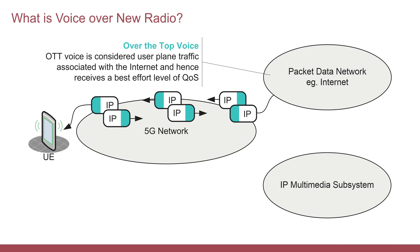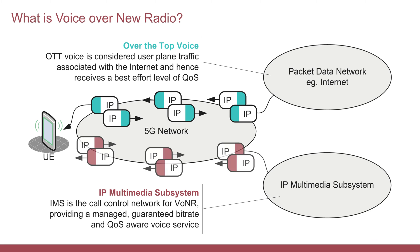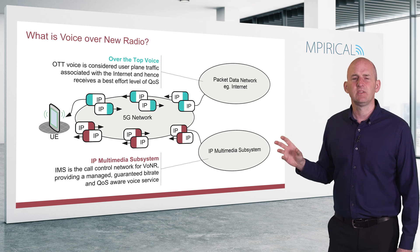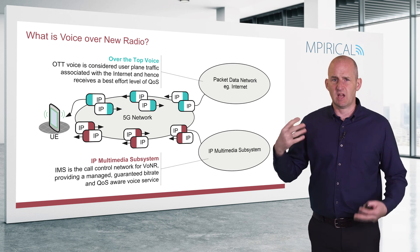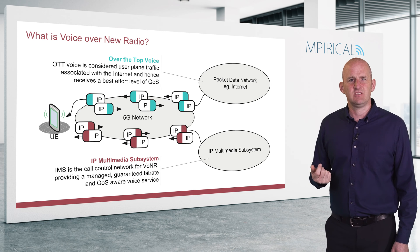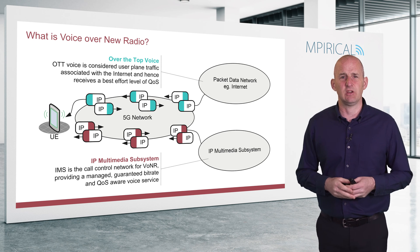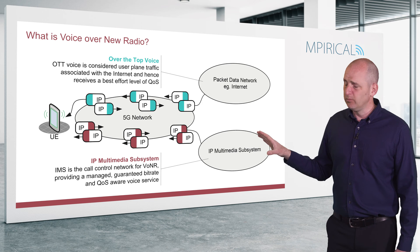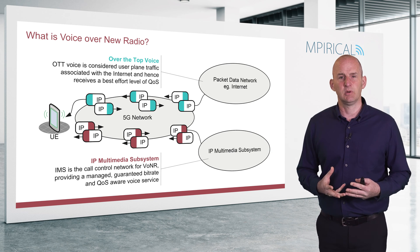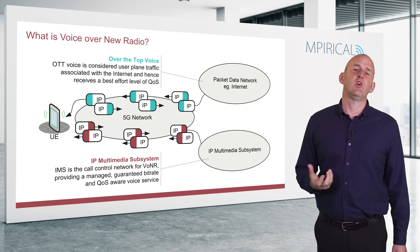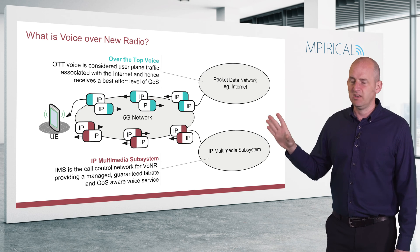There's really nothing to do with the 5G mobile service provider when delivering over-the-top services. VoNR, by contrast, is a voice service entirely managed by the mobile service provider — the big difference is it's quality of service aware. Over-the-top voice is carried on the 5G network but is considered internet traffic, so it gets a best effort service. For VoNR, the mobile service provider uses an IP multimedia subsystem to control the call setup, and is very mindful of delivering both signalling and the resulting voice. So we've got a quality-of-service aware system in place to support voice over new radio.